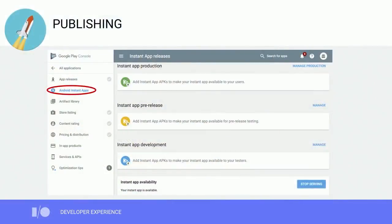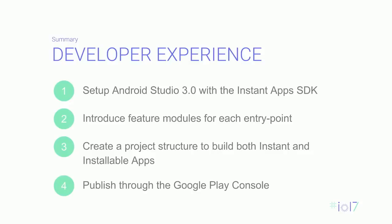Finally, when your Instant App is ready, you can use the Google Play console for publishing. We've enabled three publishing tracks — development, pre-release, and production — for you to roll out your Instant App in a phased manner. To summarize our developer experience: set up Android Studio 3.0 with the Instant Apps SDK, introduce feature modules and refactor your app into them with a feature module for each entry point, create a project structure that builds both your Instant App and installable app from the same Studio project, and publish through the Google Play console.